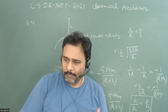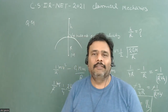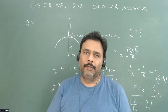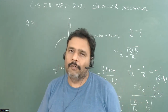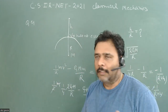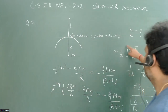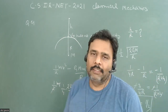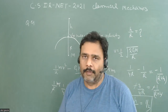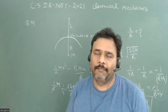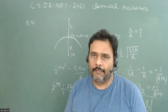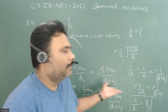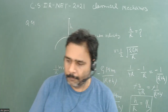Sometimes plus-2 level questions also appear in your exam, so prepare all these fundamentals. The common mistake students make is forgetting the escape velocity formula. Remember: escape velocity = √(2GM/R), where M is the mass of the Earth and R is the radius. This is a straightforward question once you have that. Thank you.